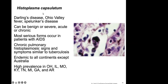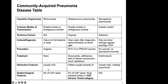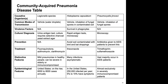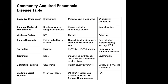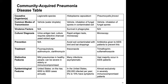Histoplasma (Darling's disease / Ohio Valley fever) can be benign or severe, acute or chronic. It is really only seen in immunocompromised patients — individuals with a functional immune system should not have to deal with it. Several states have high prevalence. These tables summarize the different causative agents for pneumonia.